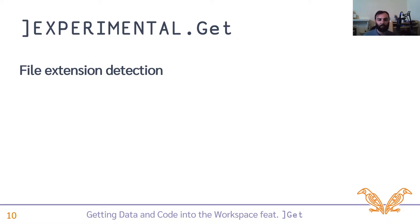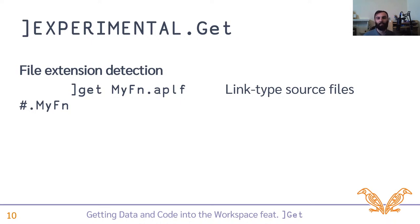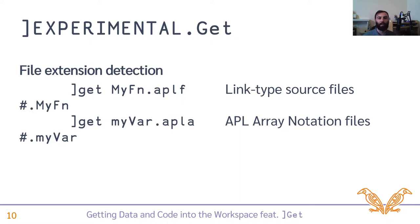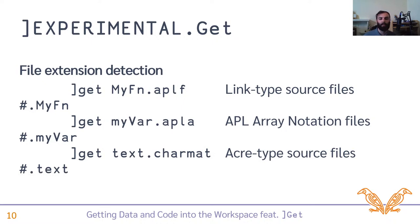If it doesn't find it in those places, it will look for source files in the directory relative to the current directory, which you can find with ]CD, or you can provide a more specified path. If you provide the name of a file — for example a .aplf link-style APL function text file — it will bring that in and define a function in the current namespace. Link also uses APL array notation, so you can have APL arrays defined in plain text. It also supports acre-type source files and .charmat files, where each new line is a row in a character matrix.